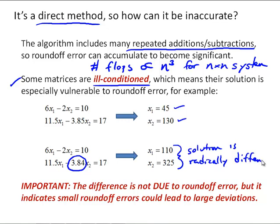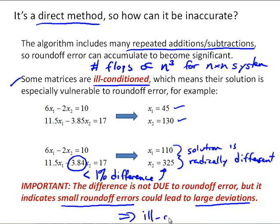And I want to emphasize here that this difference in this example is not a result of roundoff error. What this difference indicates is that if we do have a small roundoff error that we see in the coefficient matrix as we go through the elimination steps of Gauss elimination, that small roundoff error, here we have something that's less than 1% difference, that small roundoff error is leading towards a very significant difference in the solution vector. So that idea where a small roundoff error can lead to large deviation, that is the case that we're talking about when we talk about an ill-conditioned matrix.